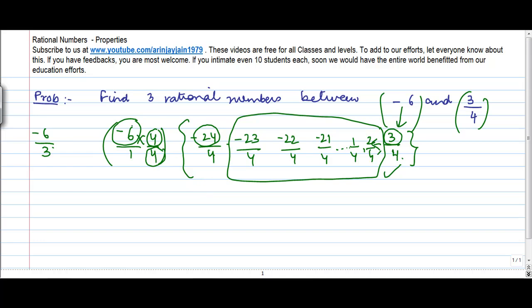So the trick here was to convert this particular number, which is minus 6, into a form where the denominator becomes common. And once that is done, everything else follows.